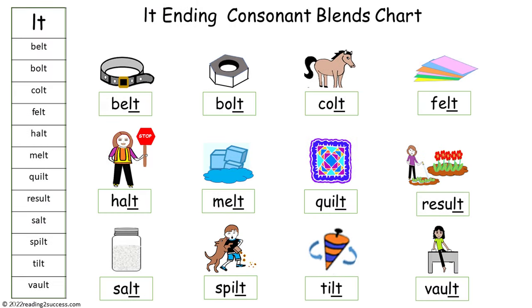Now read the words in this consonant blends chart with kids: belt, bolt, colt, felt, halt, melt, quilt, result, salt, spilt, tilt, and vault.